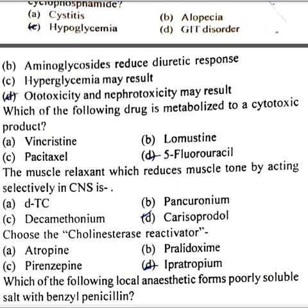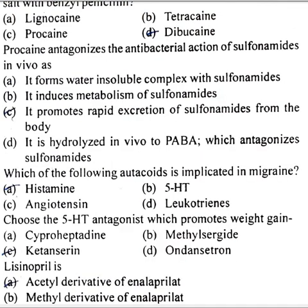The muscle relaxant which reduces muscle tone by acting selectively in the CNS is carisoprodol. Choose the cholinesterase reactivator: ipratropium. Which of the following local anesthetics forms a poorly soluble salt with benzyl penicillin? Dibucaine. Procaine antagonizes the antibacterial action of sulfonamides in vivo as it promotes rapid excretion of sulfonamides from the body.